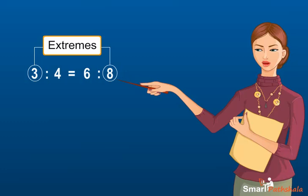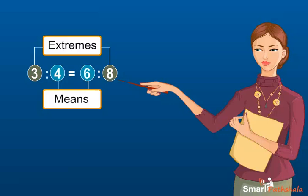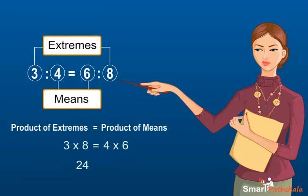There is a very important property the means and extremes follow. The product of means is equal to product of extremes. So 3 multiplied by 8 is equal to 4 multiplied by 6.